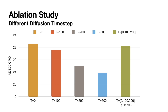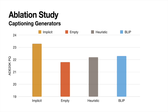In the ablation experiments, we explore which diffusion timestep T is optimal for Odyssey. The larger the T value, the larger the noise distortion added to the input image. The smallest noise at T equals zero has the best results on all metrics. Concatenating three timesteps yields similar accuracy but is three times slower. We also compare the proposed implicit captioner with empty caption and off-the-shelf captioning baselines, using heuristic captioner and BLIP as baselines. Since our implicit captioning module derives its caption from the CLIP model trained on internet-scale data, it is able to generalize best among all variants compared.